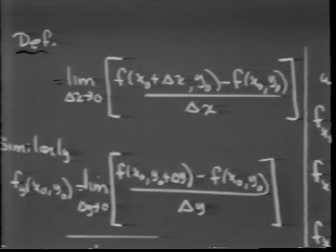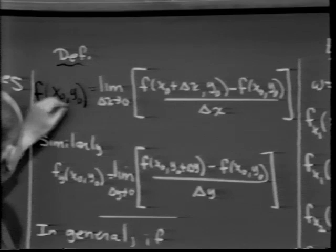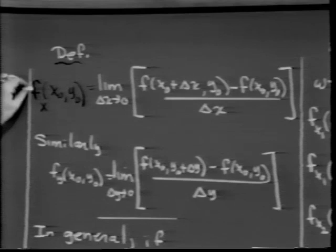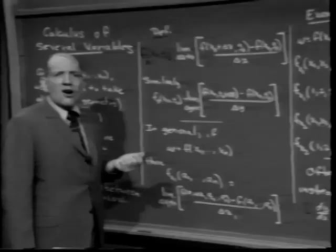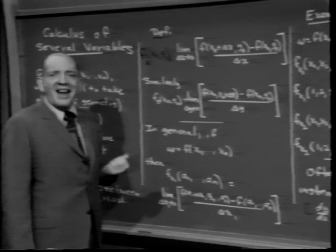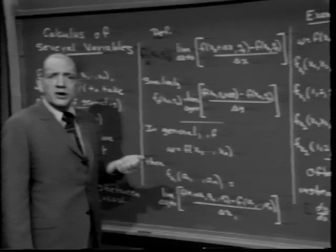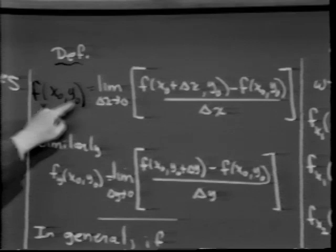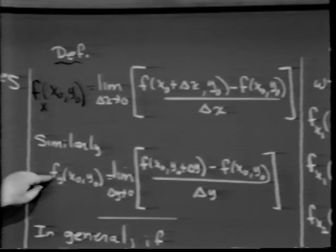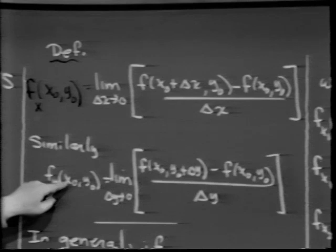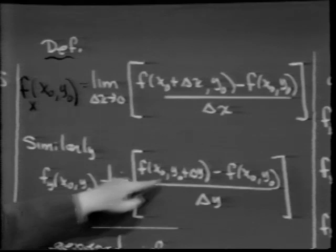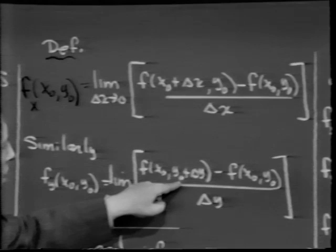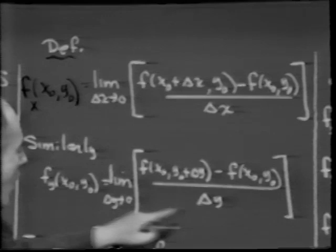We write this analogously to functions of a single real variable. Instead of f prime, we write as a subscript the variable with respect to which we're taking the derivative, and then the point at which it's evaluated — for example, f sub x of (x0, y0). Similarly, f sub y of (x0, y0) means: hold x constant at x0, let y vary between y0 and y0 + Δy, and take the limit as Δy → 0 of [f(x0, y0 + Δy) − f(x0, y0)] / Δy.